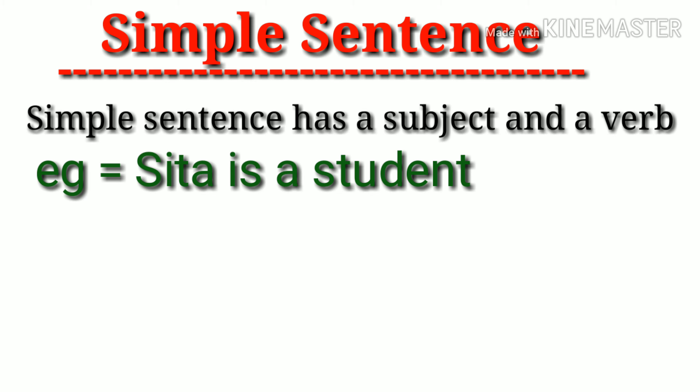One more formula: a simple sentence has a subject and a verb. I'm taking one sentence like 'Sita is a student'. Here we can see that Sita is the subject and 'is' is the verb. That means this sentence is meaningful, plus it has a verb and a subject, that means it is a simple sentence.